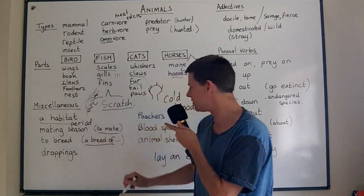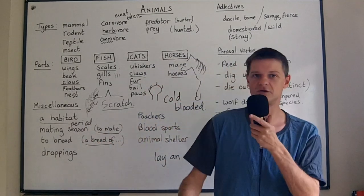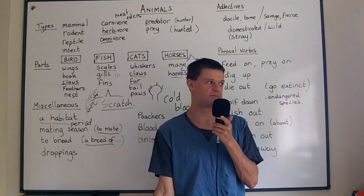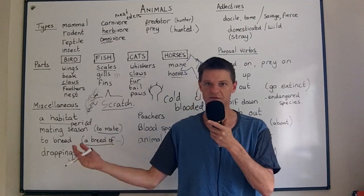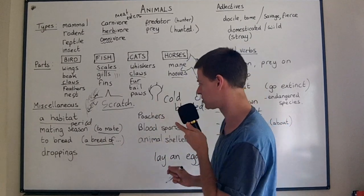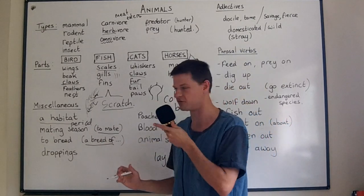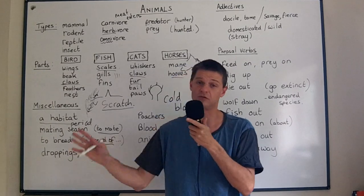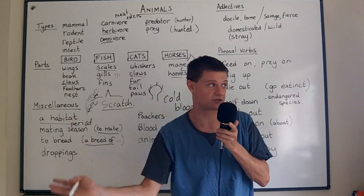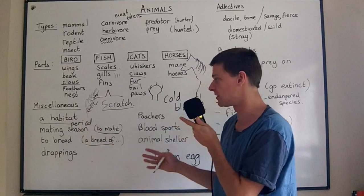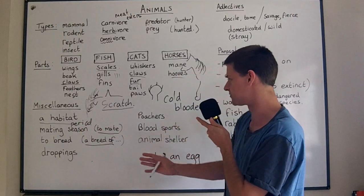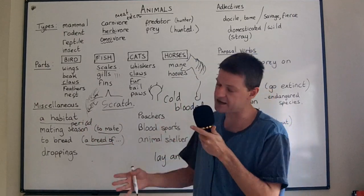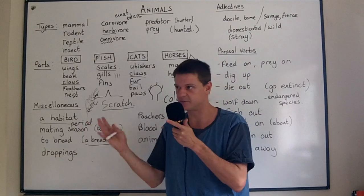A breed — we talk about this with dogs. There are many different breeds of dogs; for example, a very large breed called a rottweiler. Horses also have several different types of breeds, and many animals have different breeds — where it's the same animal but a different breed.